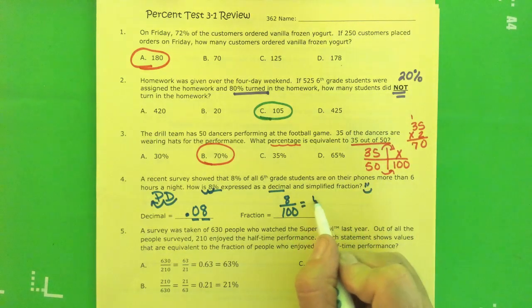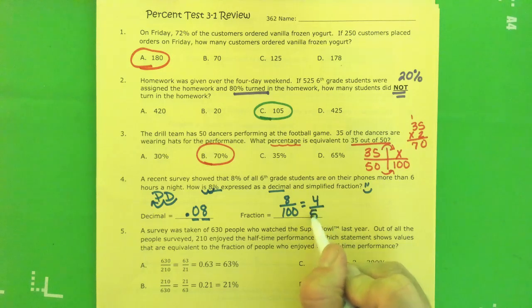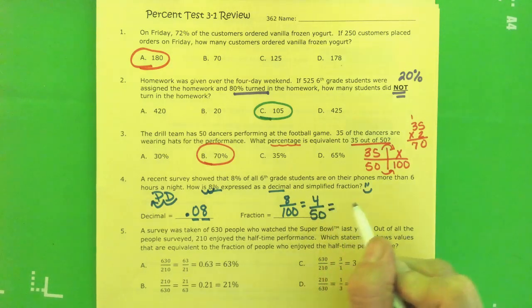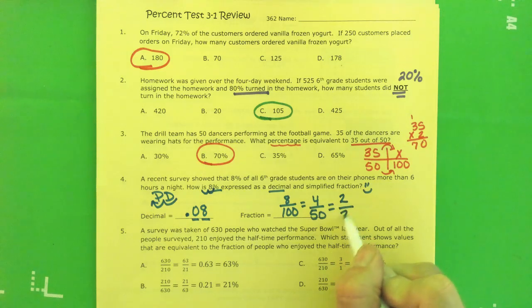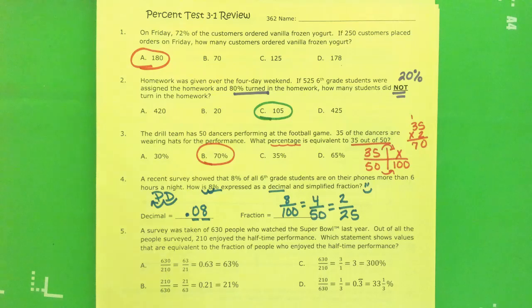Except they want it simplified. So let's reduce 8 and 100. If you cut it in half, you'll get 4 and 50. They're both even numbers, so I can cut them in half again. I get 2, and I get 25. There's our final reduced fraction, 2 25ths. On to number 5.